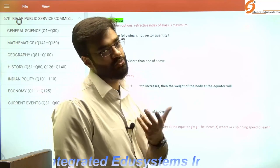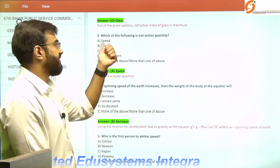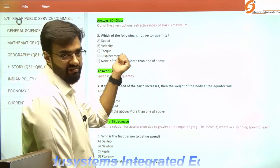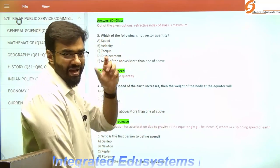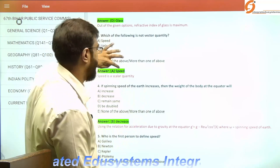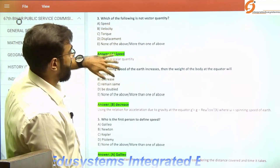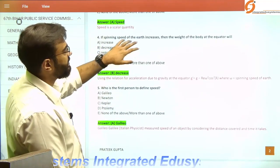Which of the following is not a vector quantity? Vector has magnitude as well as direction. Velocity, torque, and displacement are vector quantities. Speed is just a magnitude value, so it is a scalar quantity.